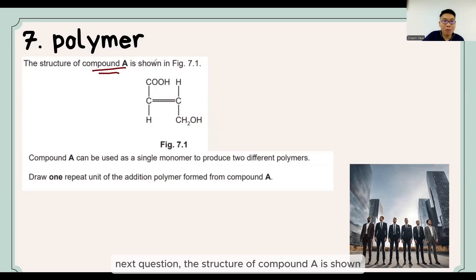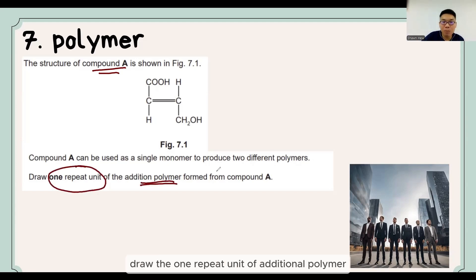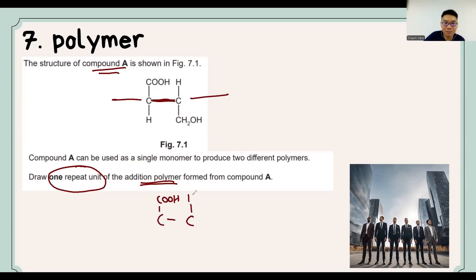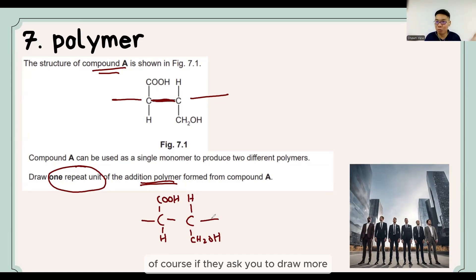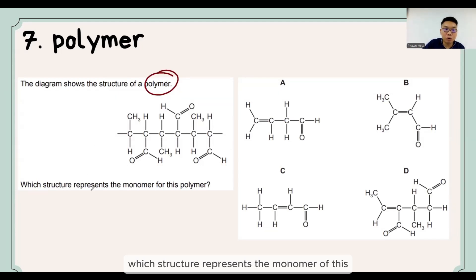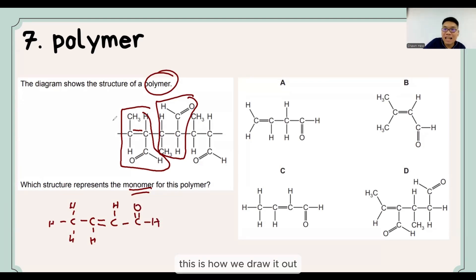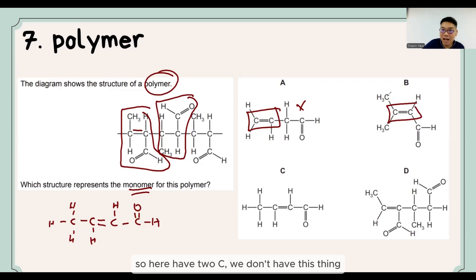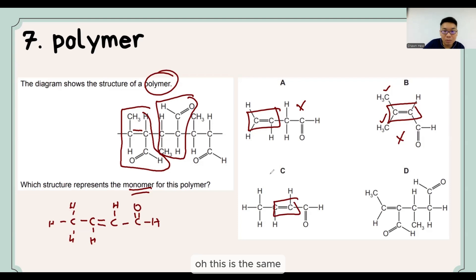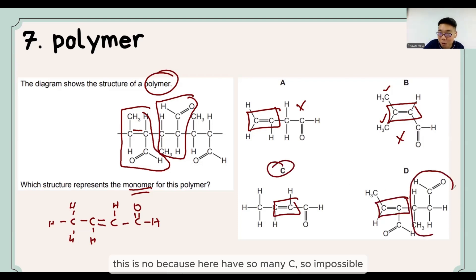Next question: compound A can be used as a single monomer to produce two different polymers. Draw the one repeat unit of the addition polymer. For addition polymerization of the C=C double bond, we change it to a single bond and join here — we copy the structure down with the bonds extended left and right as the repeat unit. Another question asks: the diagram shows the structure of a polymer — which structure represents the monomer? Every 2 carbons is the repeated unit; we put the double bond back to get the monomer. The answer is confirmed by identifying the correct 2-carbon monomer from the options.